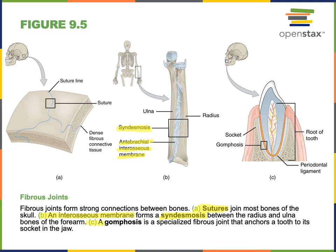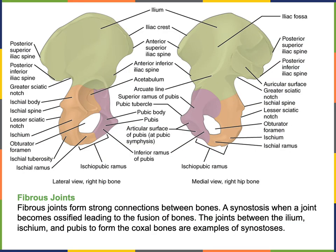Third, a gomphosis is the fibrous joint that anchors teeth into the alveolar sockets — the dental alveoli — in the mandible and maxilla. A special fibrous connective tissue called the periodontal ligament anchors the teeth, connecting the cementum of the tooth to the bone of the dental alveolus. Another type of fibrous joint is a synostosis, which occurs when two bones fuse together, as seen in the joints holding the ilium, ischium, and pubis together to form the coxal bones.